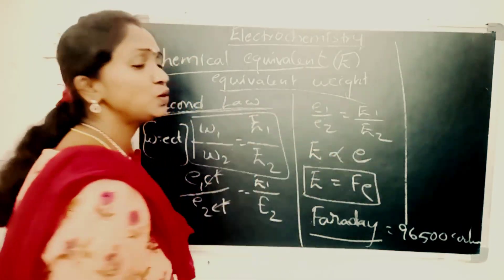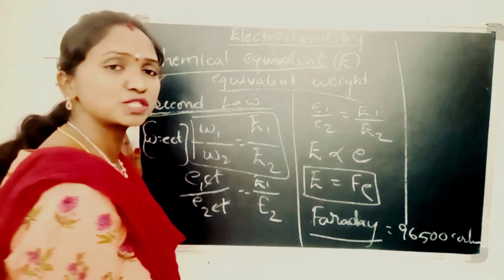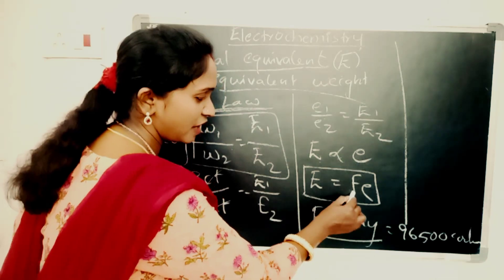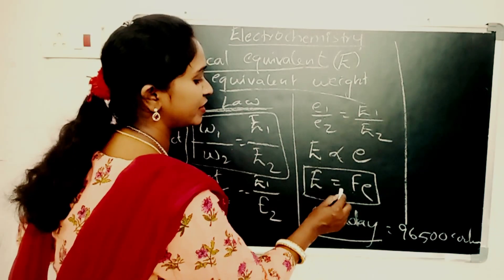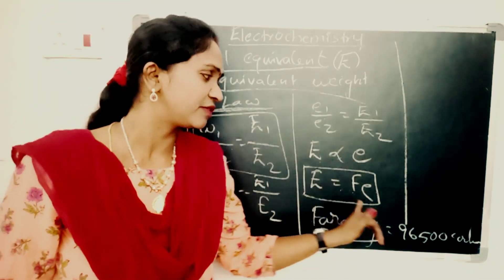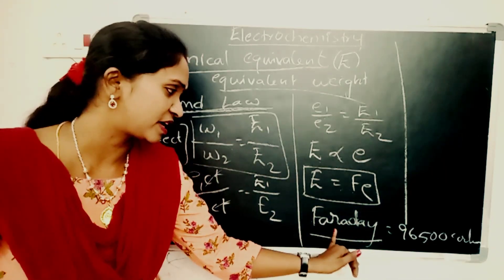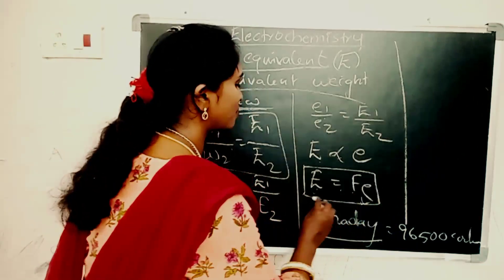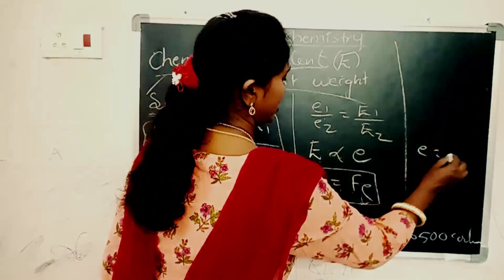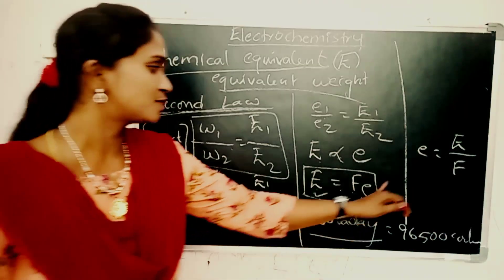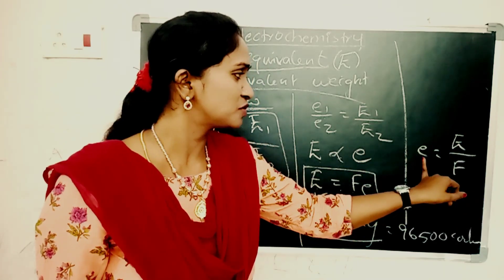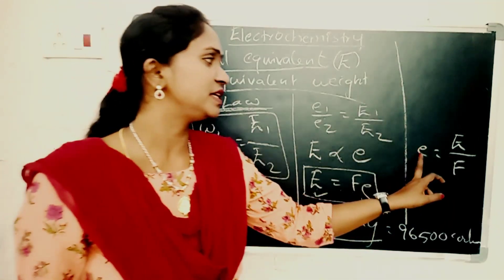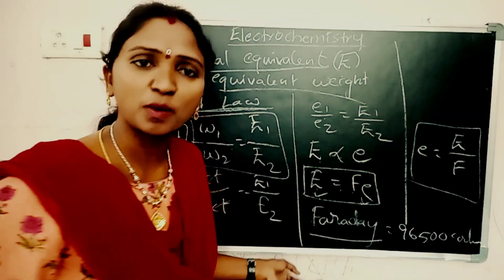Capital E is directly proportional to small e — chemical equivalent is directly proportional to electrochemical equivalent. The proportionality constant F is called Faraday, and capital E equals F times small e. The value of one Faraday is 96500 Coulombs. There is a relation between small e and capital E: small e equals capital E divided by F. We can use this formula in problems on Faraday's first law.